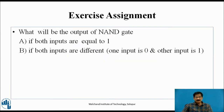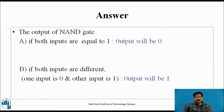Exercise assignment. First question: what will be the output of a NAND gate if both inputs are equal to 1? Second question: if both inputs are different, that is one input is 0 and the other is 1? The answers: for both inputs equal to 1, the output will be 0. For different inputs (0 and 1), the output will be 1.